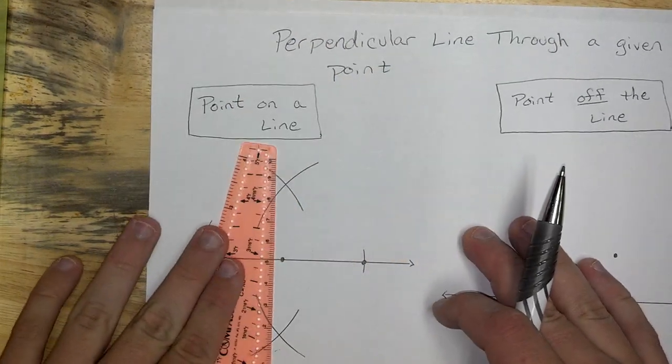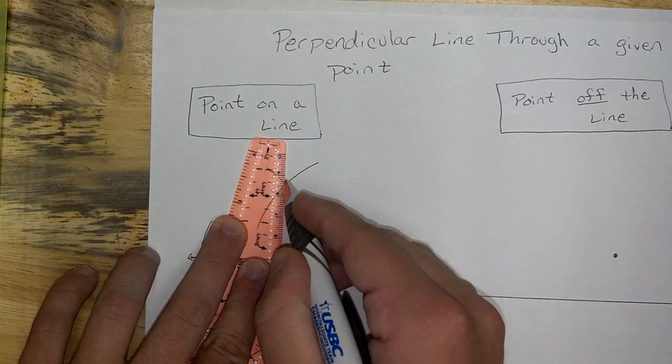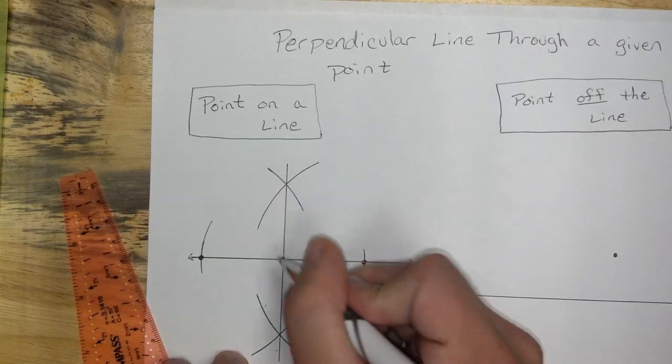Now, connect the dots, or connect the two crosses, and you're going to have a perpendicular line right through that midpoint.